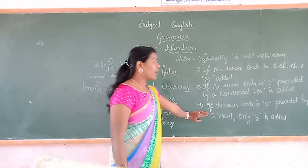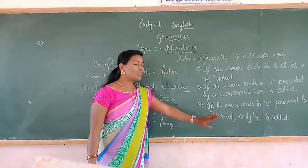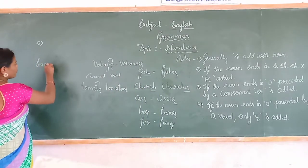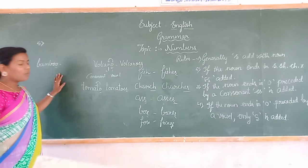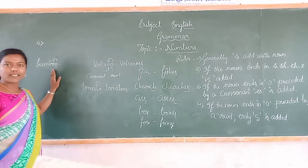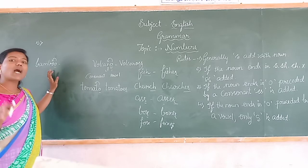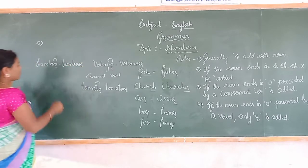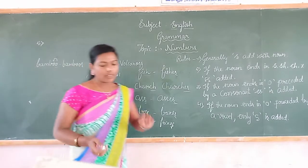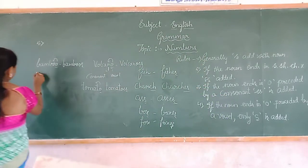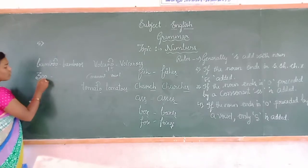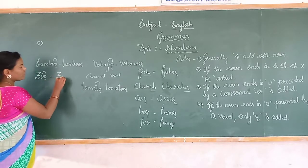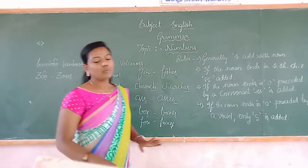Rule four: if the noun ends in O preceded by a vowel, only S is added. For example, 'bamboo' ends with O and the preceding letter is also O — a vowel — so we add only S, making 'bamboos.' Similarly, 'zoo' ends with O, the preceding letter is also a vowel O, so we add only S — 'zoos.'